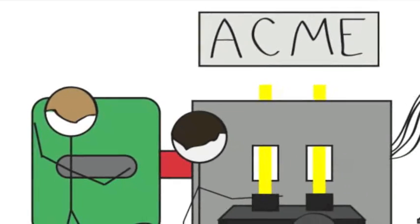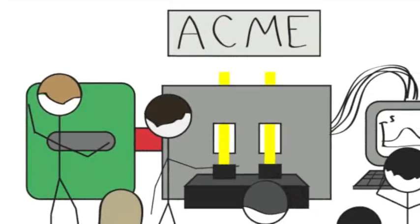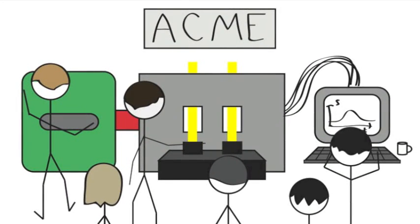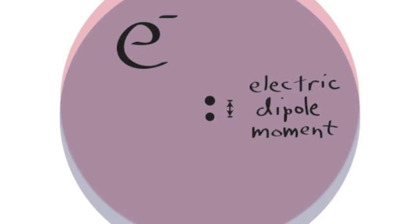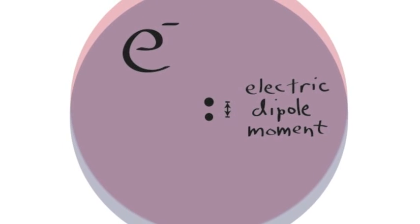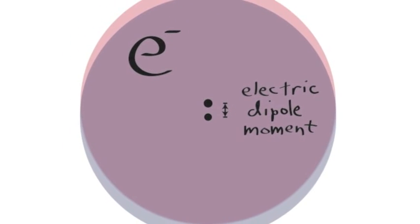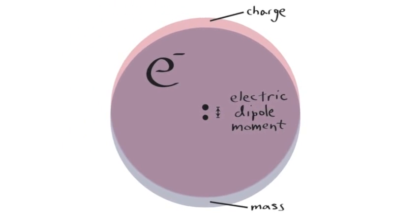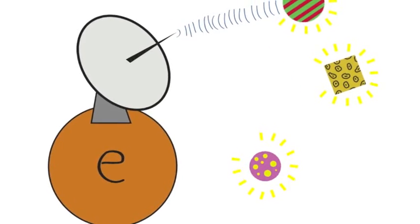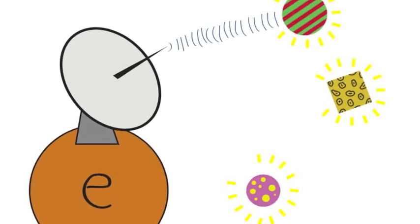The ACME collaboration is looking for new particles in a very different way, by making a precise measurement of a familiar particle, the electron. We are trying to measure the electron's electric dipole moment, which is the distance between the electron's center of mass and its center of charge. The electron acts as an antenna, sensitive to the presence of the weird quantum mess of particles surrounding it all the time.